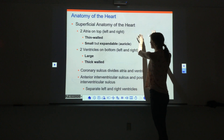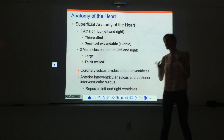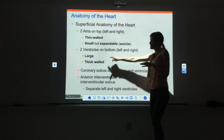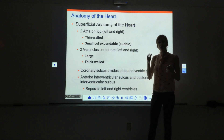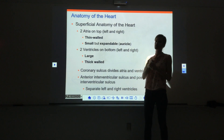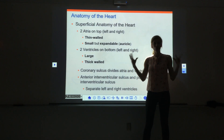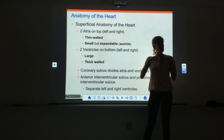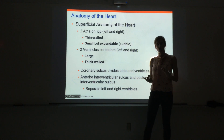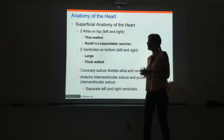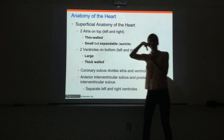On top we have the right atrium and left atrium, and on the bottom the right ventricle and left ventricle. The ventricles appear much larger from the outside because they have really thick muscular walls. They are pumping chambers — they contract hard to push blood either to the lungs or to the body, so they need to be strong with much thicker, stronger walls.